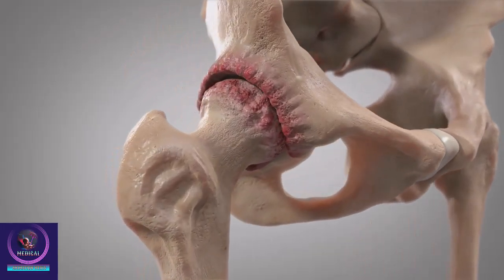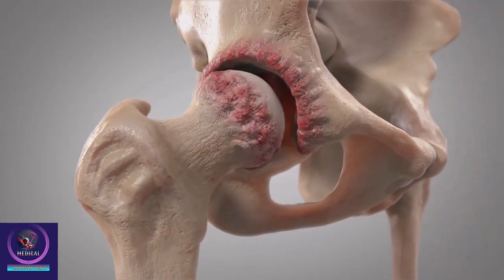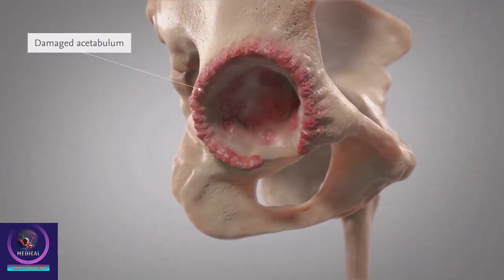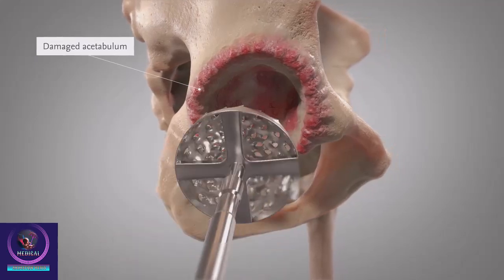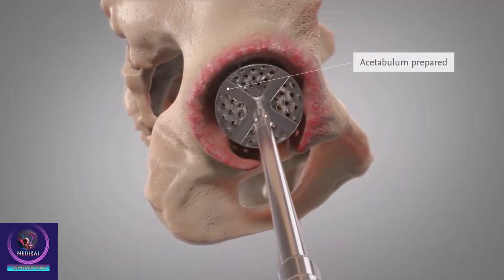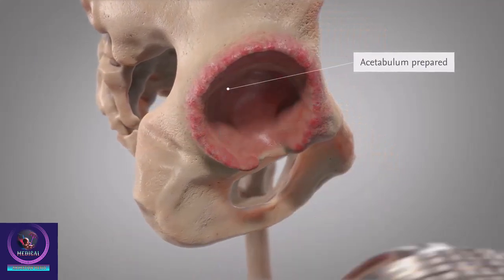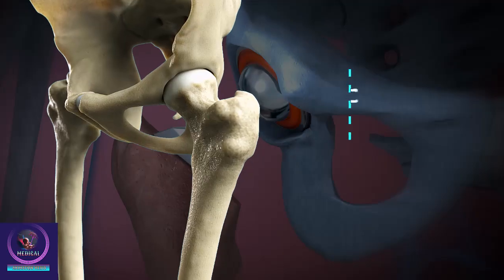A total hip replacement or arthroplasty is a surgical procedure to remove damaged portions of your hip joint and replace them with plastic and metal implants. A total hip replacement can reduce pain and restore your hip function.